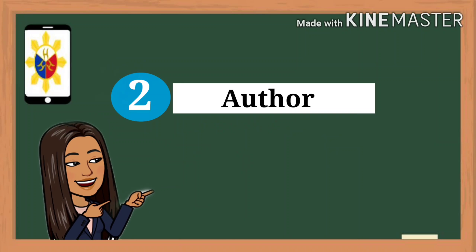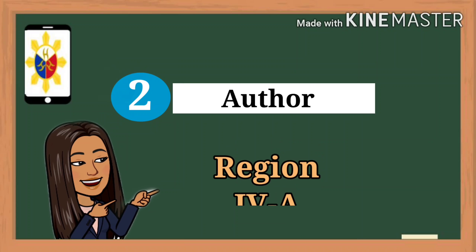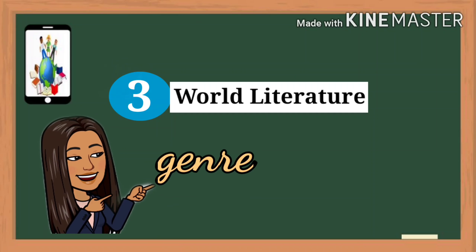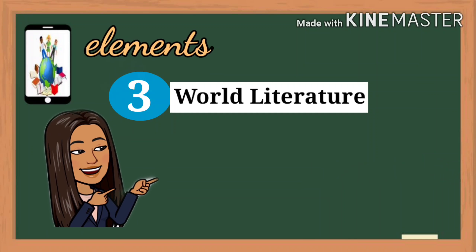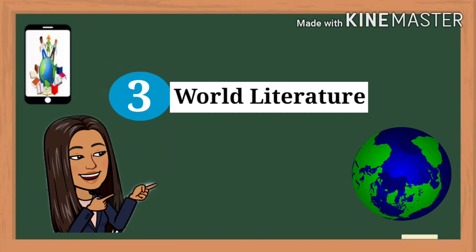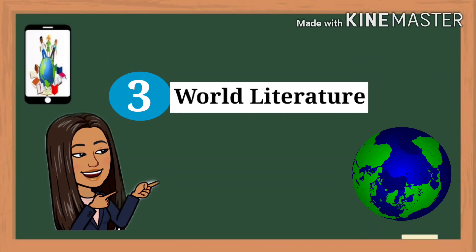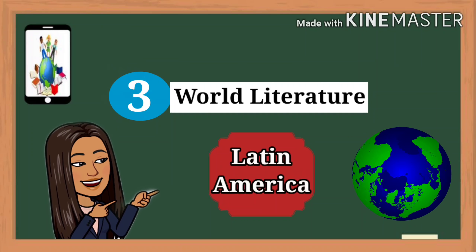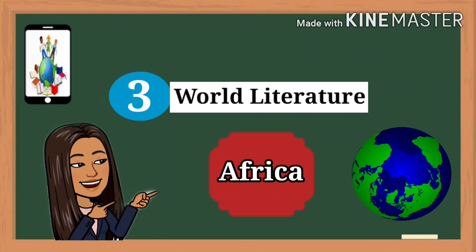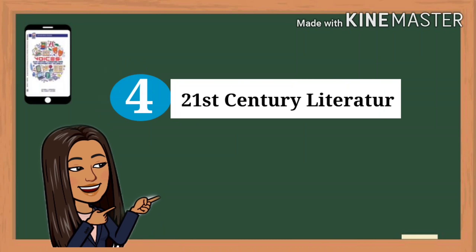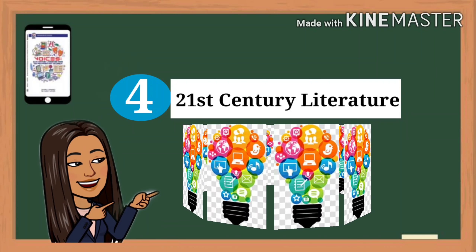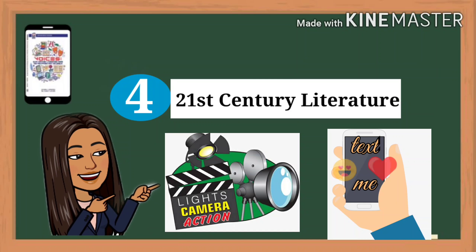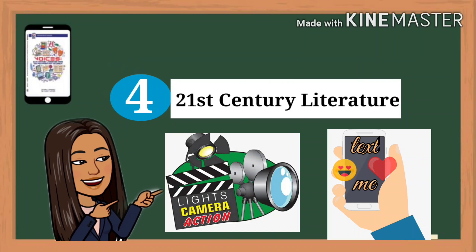We will give emphasis to Region 4A. Third concept: comparing and contrasting the various literary genres and their structure, elements, and tradition from across the globe — most especially from Asia, North America, Europe, Latin America, and Africa. Fourth and last concept: identifying literature in the 21st Century and appreciating the role of technology in shaping literature in the 21st Century.